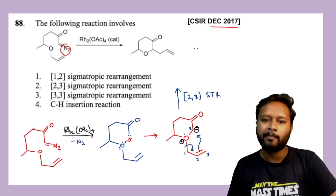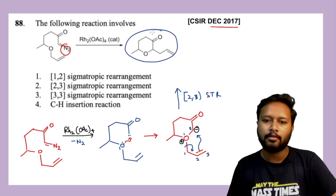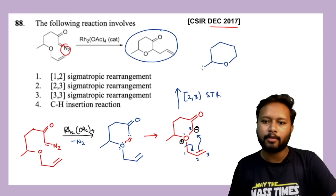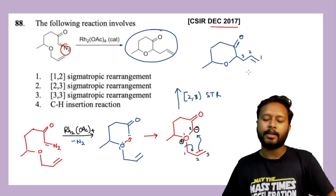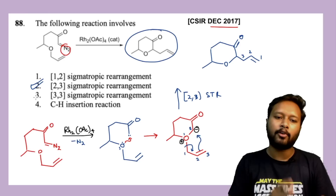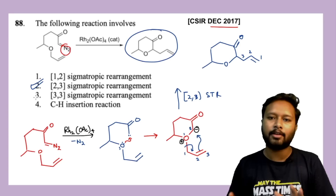The final product has the groups rearranged: oxygen here, one methyl group, the bond to oxygen broken, and 1, 2, 3 carbons with a new pi bond formed between C1 and C2, plus the double bond O. That's the product. So the mechanism was carbene formation followed by a [2,3]-sigmatropic reaction.